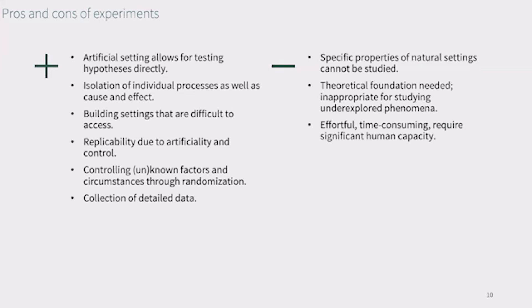Think about the famous Milgram experiment in which researchers investigated participants' willingness to obey authority when instructed to harm a third person through electric shocks. Given the high degrees of artificiality and control, experiments are usually easily replicable. What's more, randomization allows us to control for known and unknown factors and external circumstances because it cancels them out at group level. Last, unlike for instance in field observations, we can gather detailed data, for example about participants or latent constructs, to enrich our models.